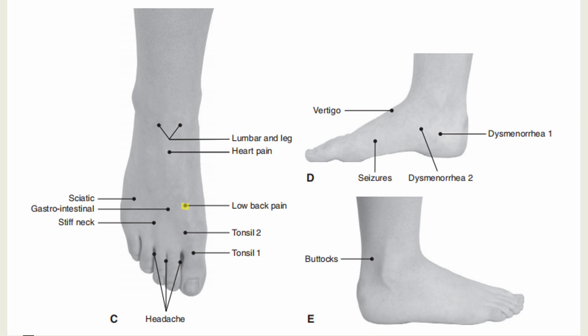The low back pain point is located in the depression anterior to the base of the first metatarsal bone. Indications include acute low back injury, back spasm, and back pain. The sciatica point is located at the midpoint between Gallbladder 41 (Zulinqi) and Gallbladder 42 (Diwuhui). Indication: sciatic nerve pain.